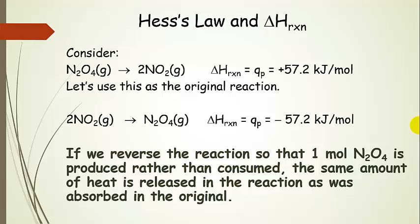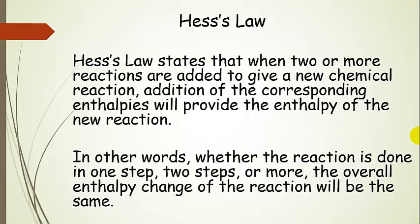When we reverse a reaction, we just change the sign on delta H reaction. And in this reversed direction, the reaction is exothermic. Here's the official definition: Hess's Law states that when two or more reactions are added to give a new chemical reaction, addition of the corresponding enthalpies will provide the enthalpy of the new reaction. This is just another way of saying that whether the reaction is done in one step, two steps, or five steps, the overall enthalpy change will be the same.